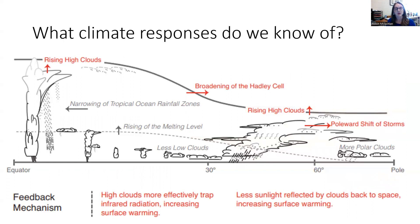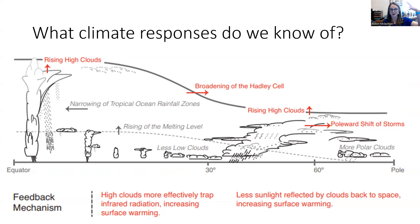We do know some of the basics, even if we don't know all the details. We know there is a climate response in the clouds — there tends to be more higher clouds, and higher clouds trap more heat. So as clouds rise, they trap more heat, causing the Earth to get warmer — that's going to be a positive feedback loop. We also see a broadening of the Hadley cell, which controls evaporation near the equator.